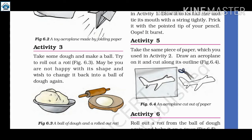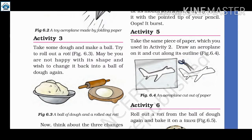In activity number 5, what we have done is that in activity number 2, we draw an aeroplane and then cut out the outline with the help of scissors. Once we cut the outline according to the shape of the aeroplane, the paper changes its form.